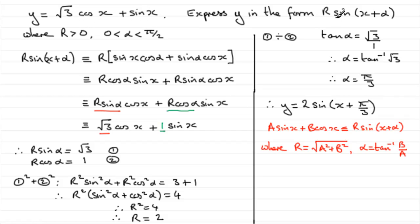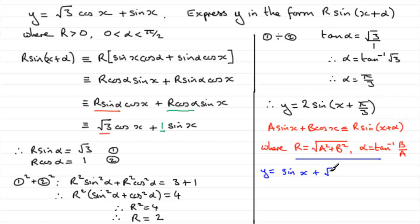So when it comes to using the quick method on this question, to get it in the right format I need the sine term first. So I rewrite y as sine x plus root 3 cos x. Comparing with a sine x plus b cos x, I can see that a equals 1 and b equals root 3. So I immediately know that r equals the square root of a squared plus b squared.